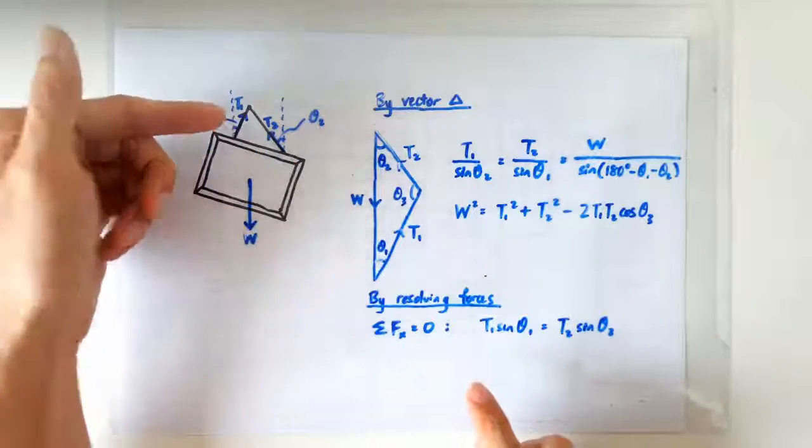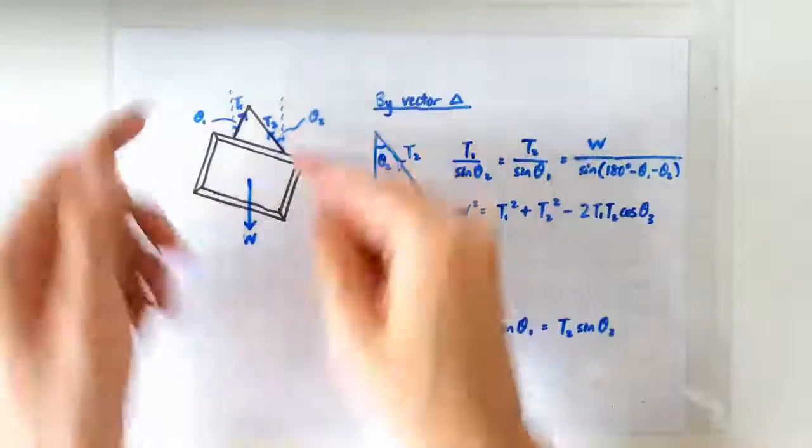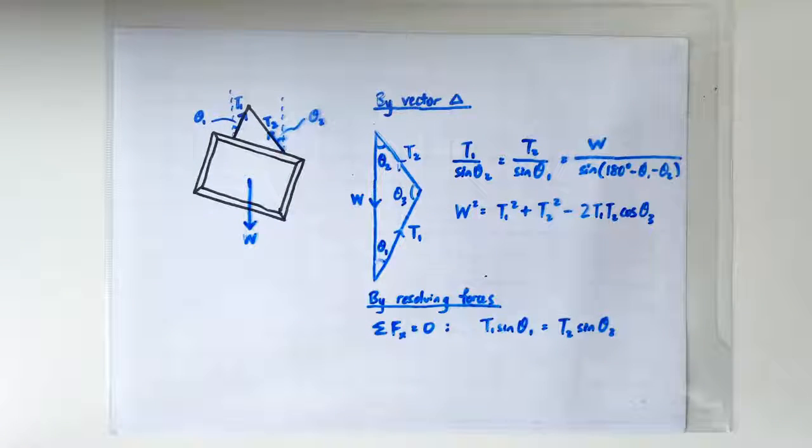Because this guy's component is rightward, this guy's component is leftward, so they must match each other. W, of course, is a vertical force and has no horizontal component.